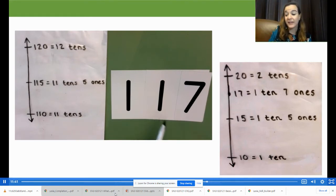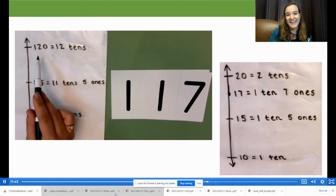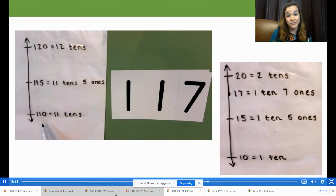117 is only three away from 120 and it's seven away from 110. It is also two more ones than our halfway point. Label 117 on your number line.